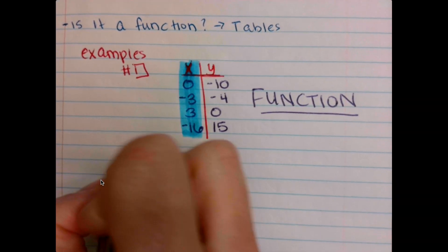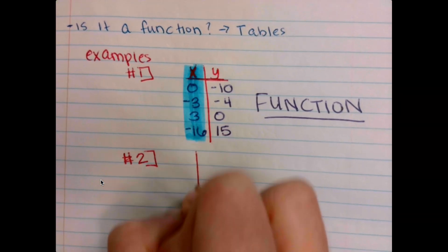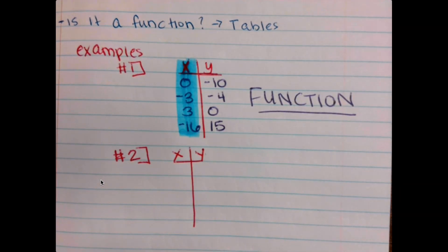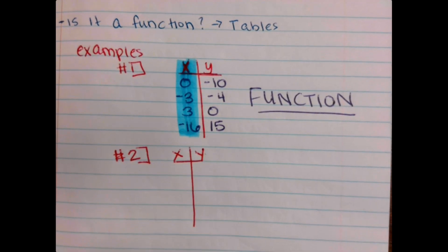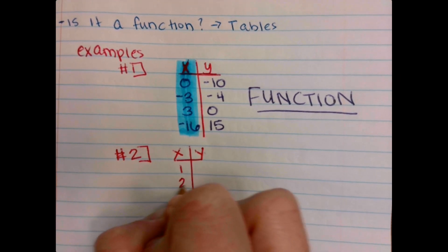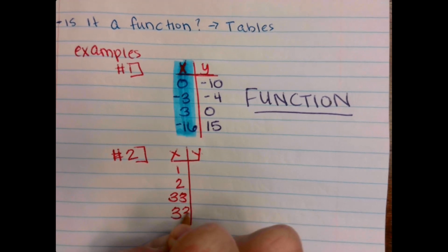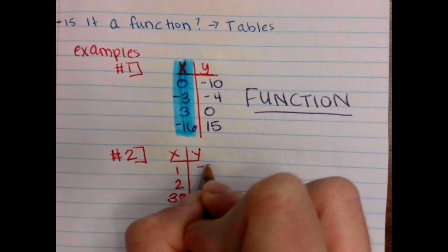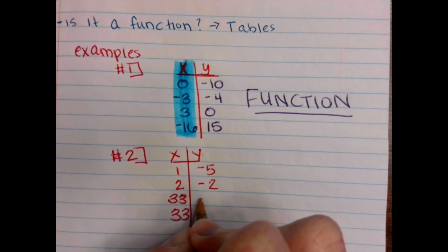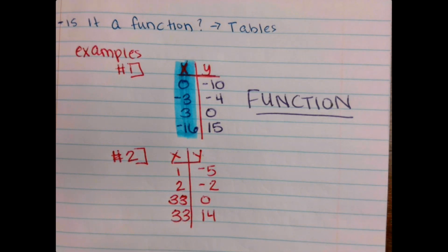On to number 2. Same thing, x and y. On the left side, we will have 1, 2, 33, 33. On the right side, we will have negative 5, negative 2, 0, and 14.